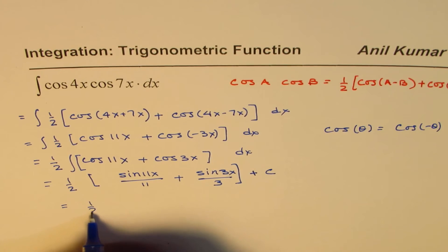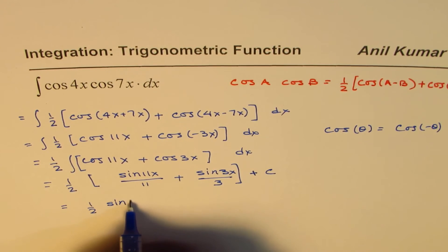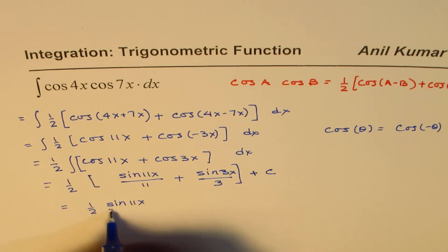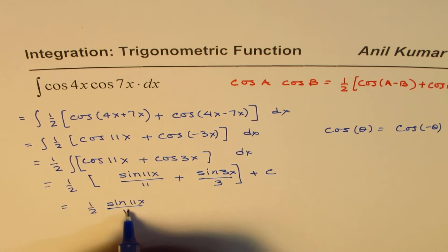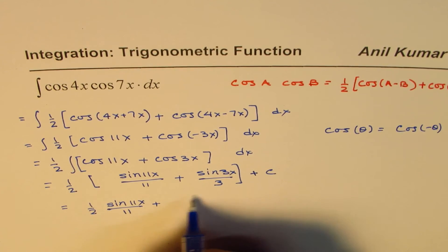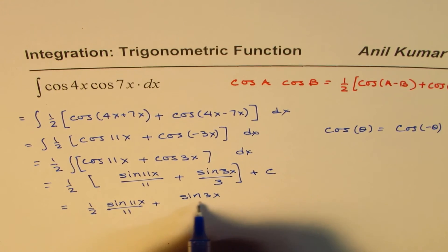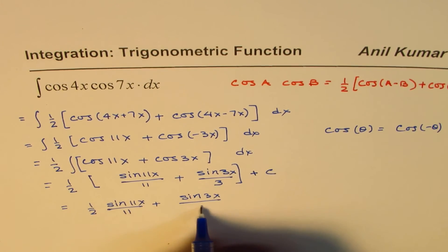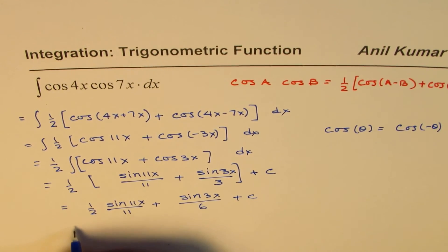So we can now write the answer as half sin 11x over 11 plus sin 3x over 2 times 3 plus c. Or finally,